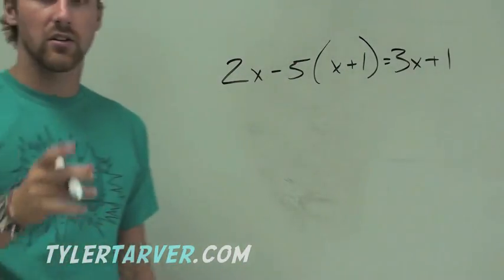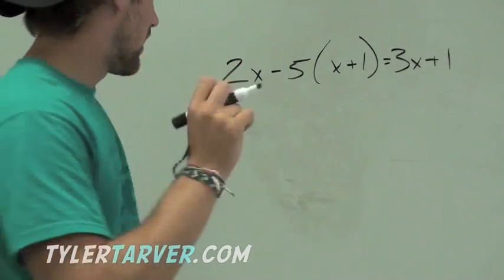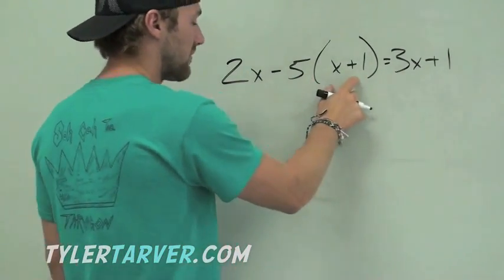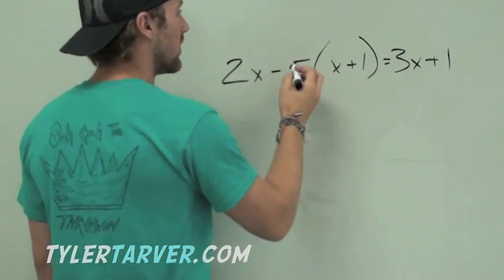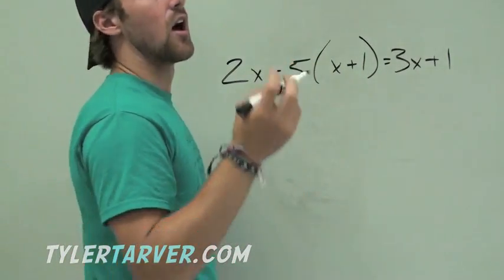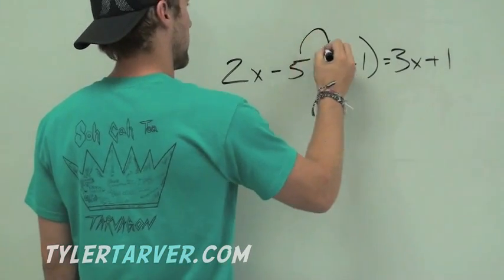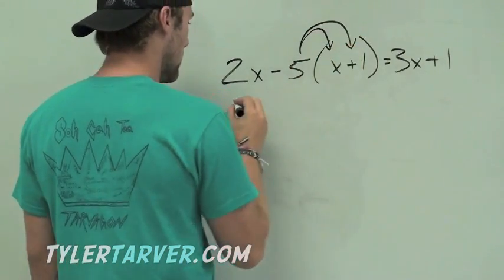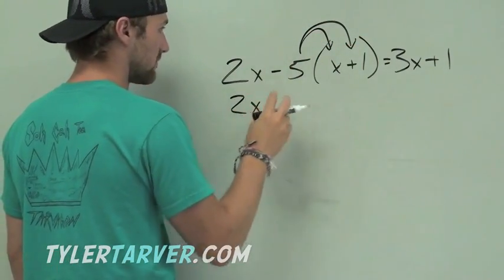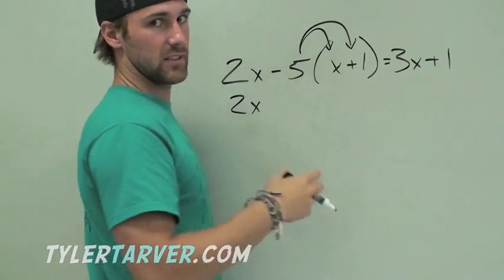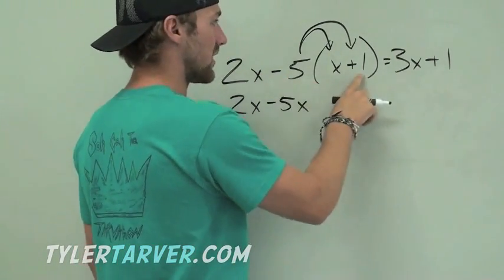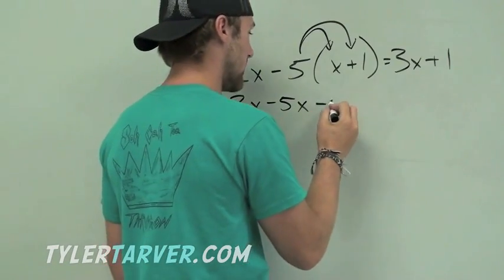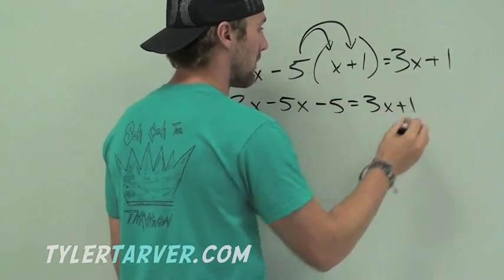Looks big and complicated. Take it one step at a time. First of all, we've got a negative 5, not 5, in front of our parentheses. So we, rhymes with distribute, distribute. So we distribute it in there to both of those. Bring everything down. Negative 5 times x is negative 5x. Negative 5 times positive 1. Negative 5 equals 3x plus 1.